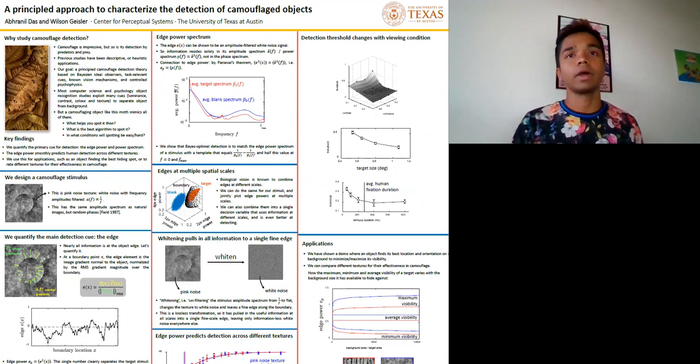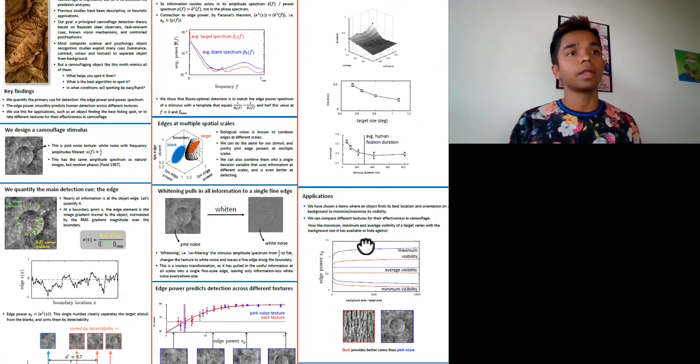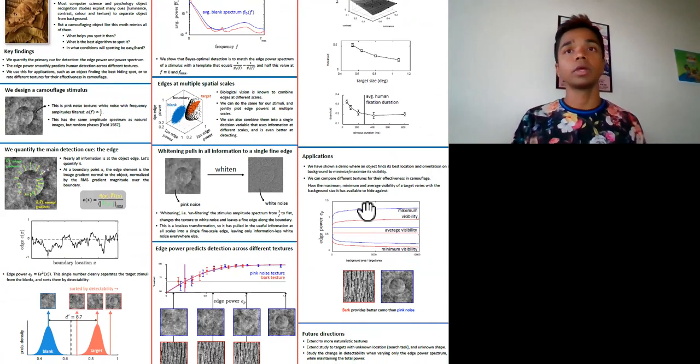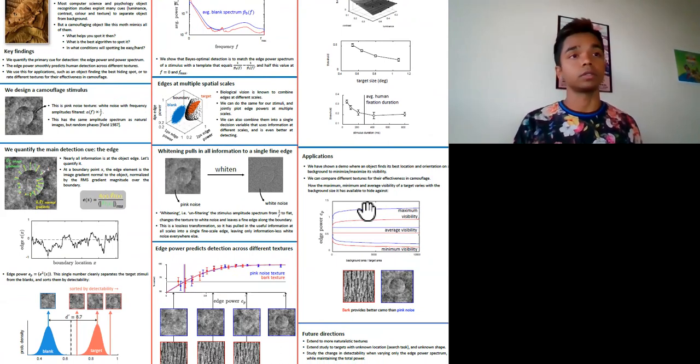We can also apply our findings towards designing effective camouflage. For example, an object such as a drone can compute its edge power and find the location and orientation on a background to land on that makes it easy or difficult to spot.